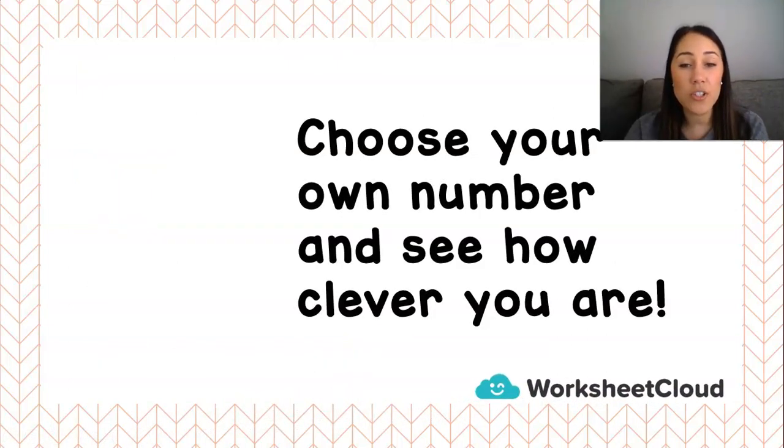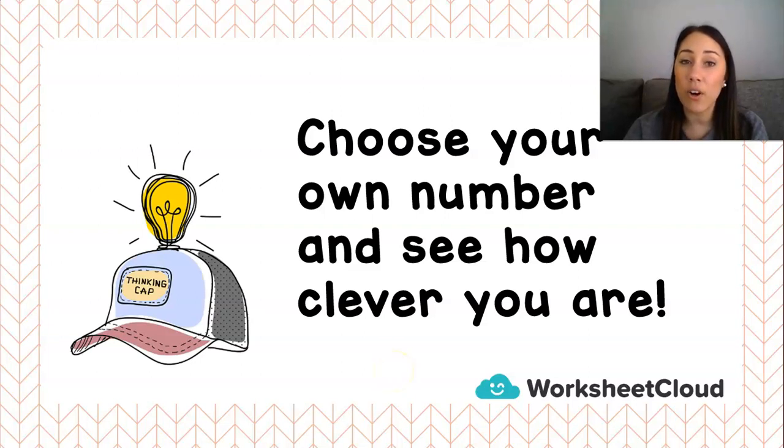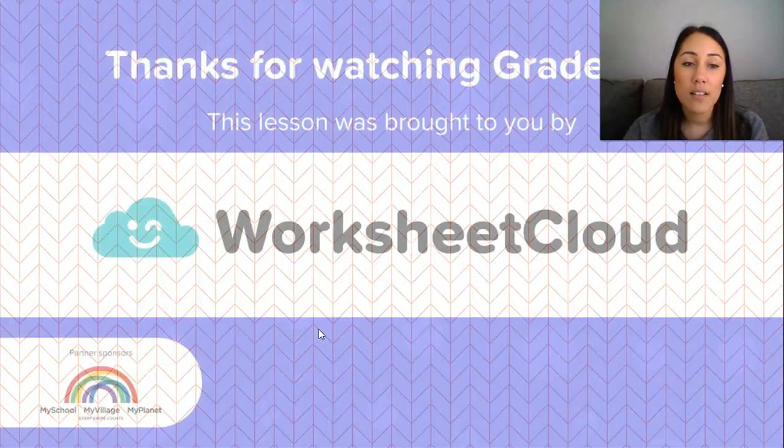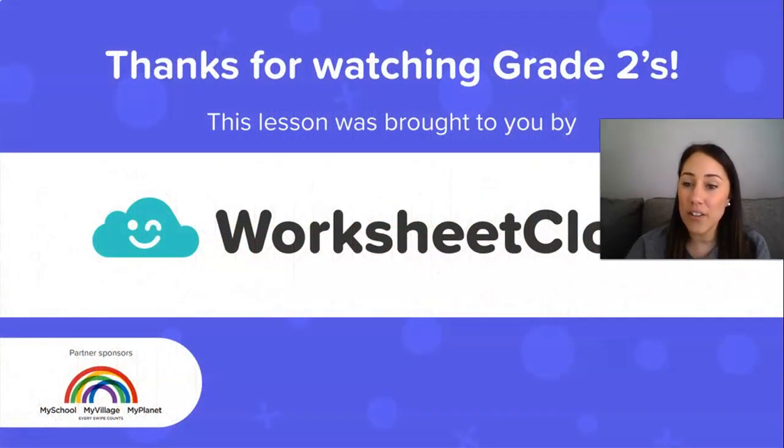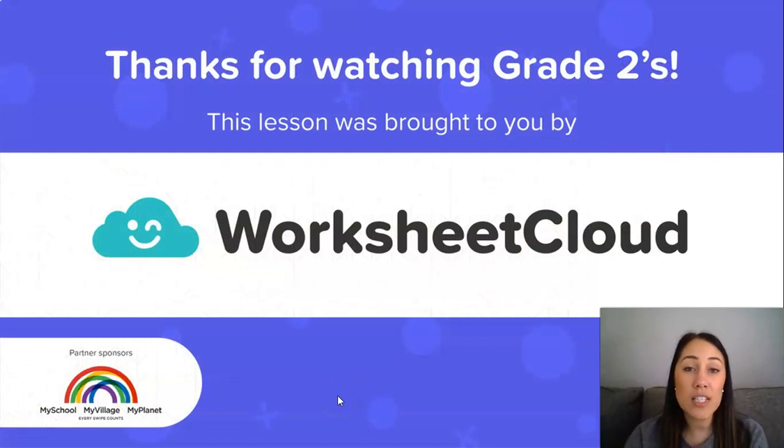So, now, grade 2s, you can choose your own number. And you can see how clever you are. You could do all those different things with your own number that you choose. Remember to choose an even number so that you can halve your number properly. So, grade 2s, you are very clever. We've done quite a bit of revision today. And we worked with much bigger numbers than we worked with before. Closer to 100 than we've ever worked before. And I hope you have a lovely afternoon. I hope you enjoy practicing your number of the day. And until the next time we can learn something, goodbye, grade 2s. And this lesson was brought to you by Worksheet Cloud.